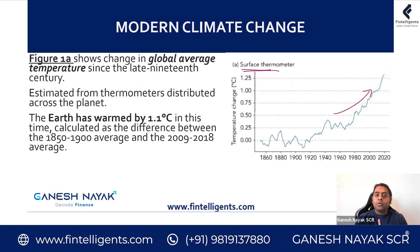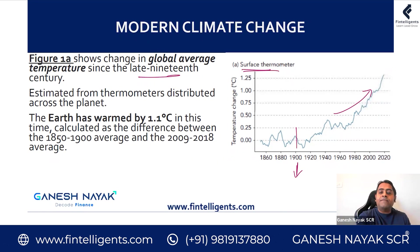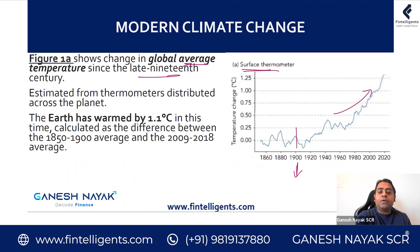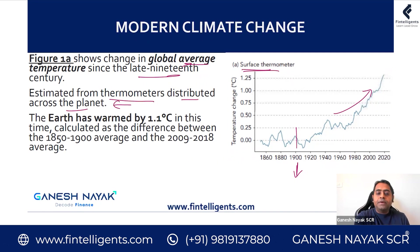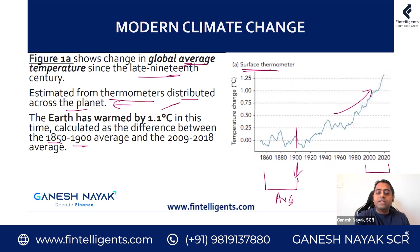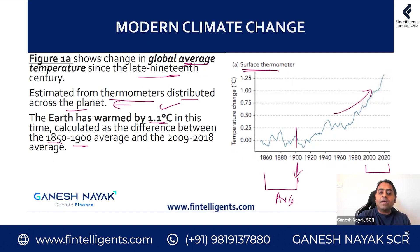Since the late 19th century we can see that the increase in the global average temperature — and why they're using the word 'average' here — it simply means we have set thermometers in different locations on the earth and we are taking the average temperature from all of this data, estimated from thermometers distributed across the planet. From the reference period of 1950 to 1990, when we compare to 2009 to 2018, the difference is primarily 1.1 degrees Celsius.